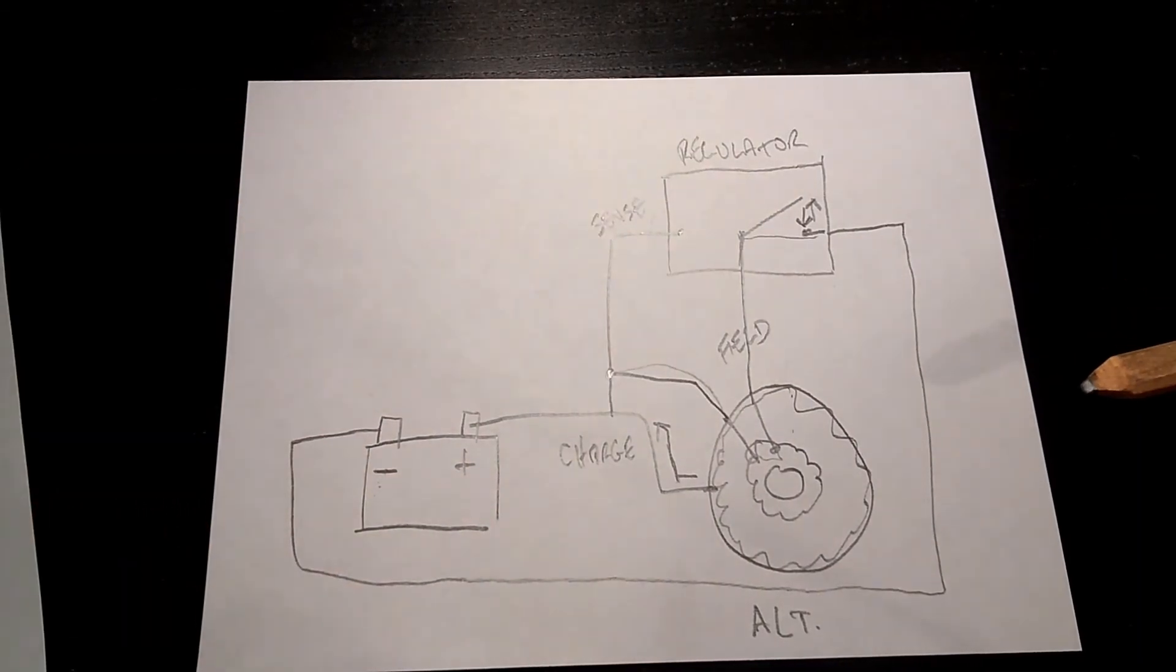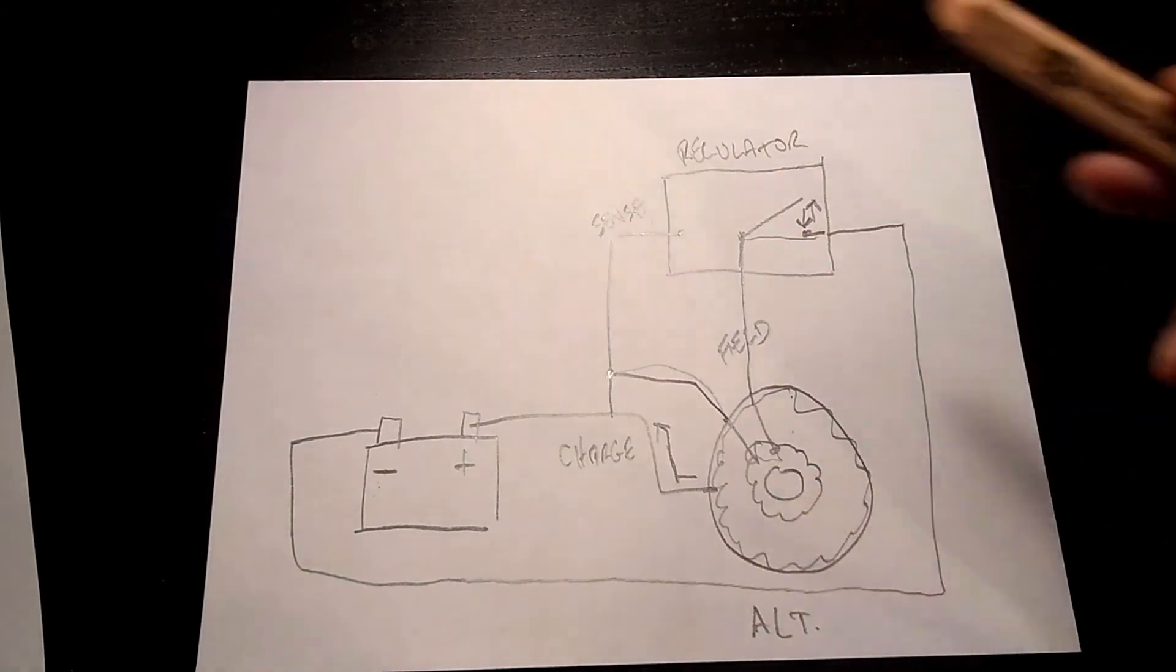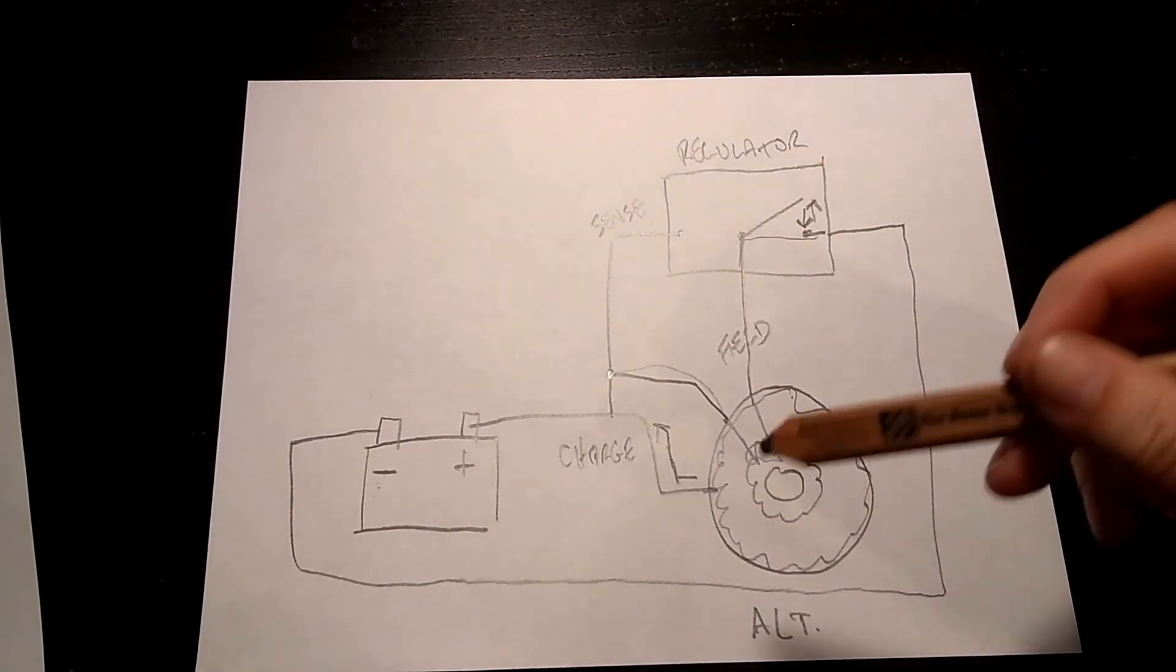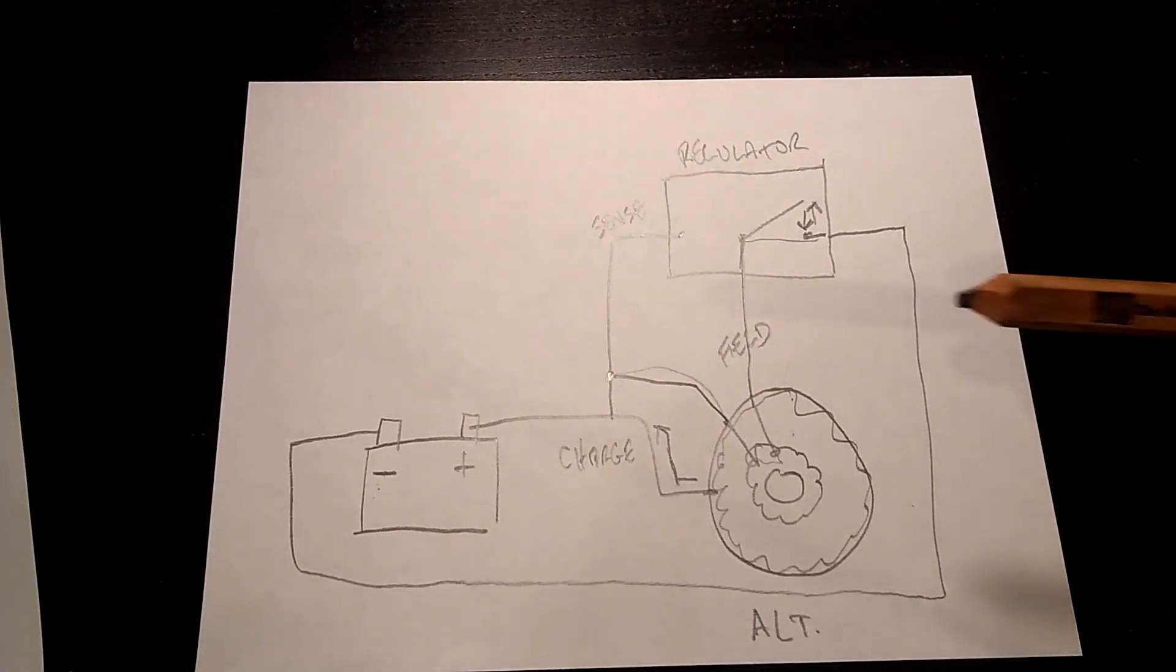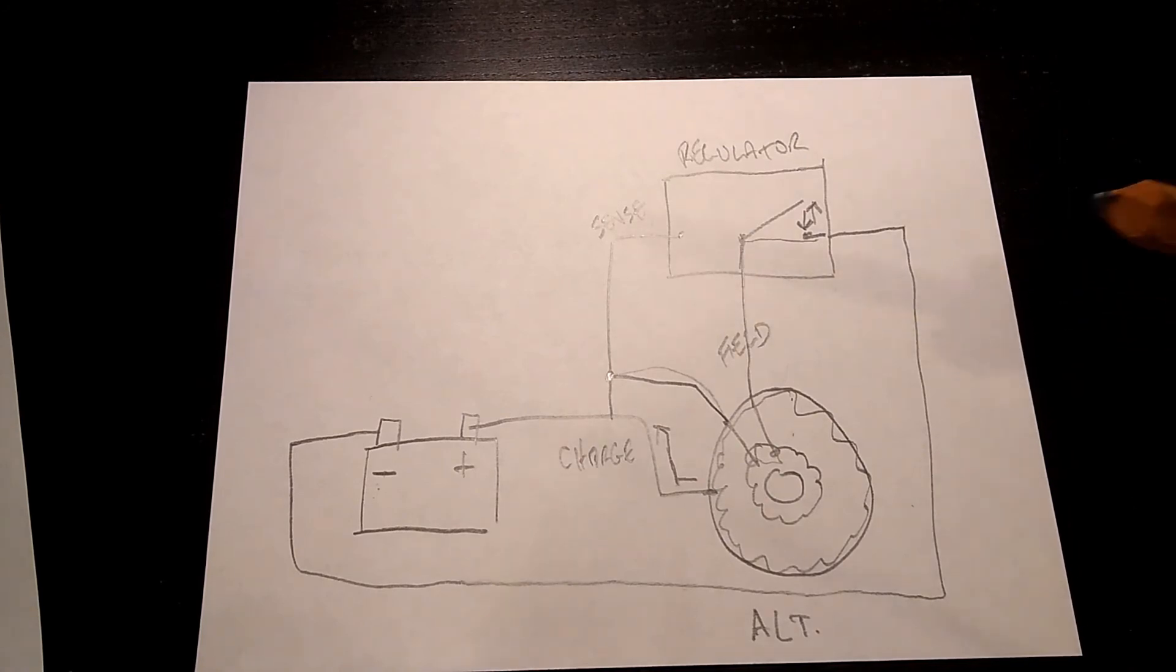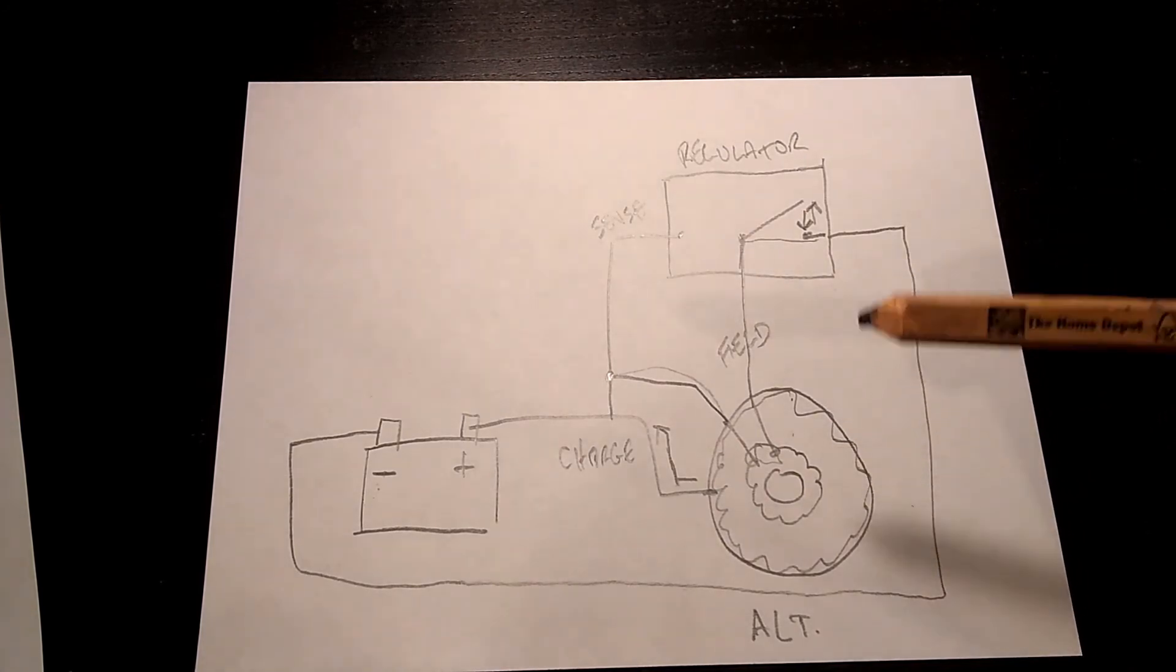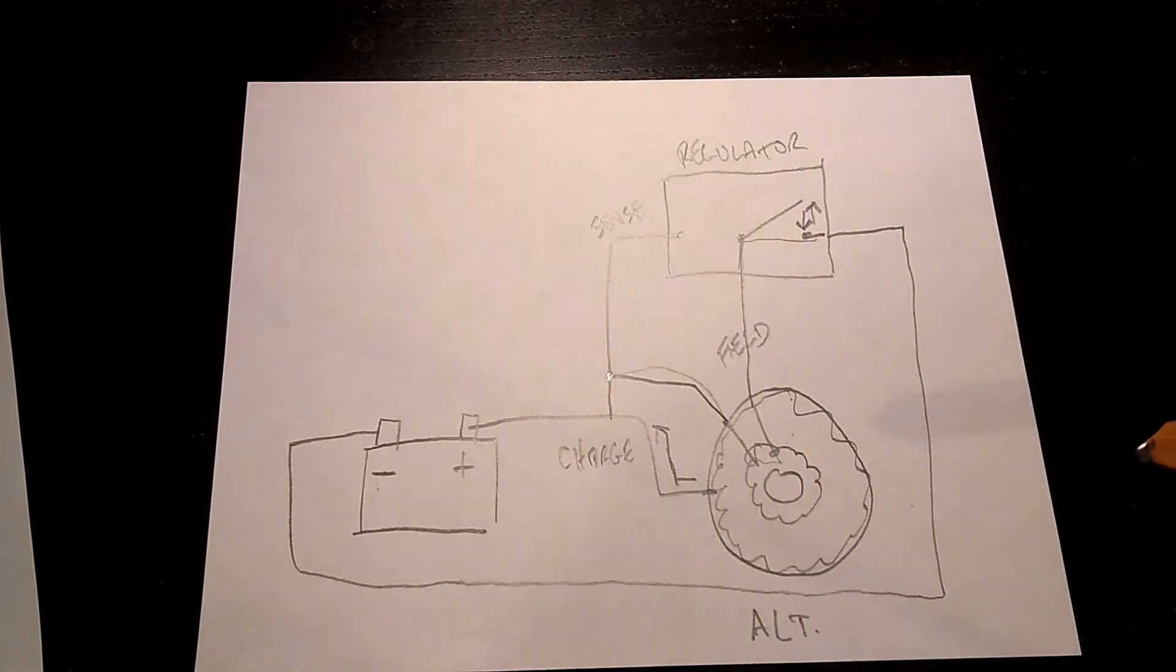They may look complex. They may be difficult because you've got a lot of wires, they're wrapped in loom, a lot of things like that. But that's all that's going on in any alternator and charging system on a vehicle. Now you know. Thanks for watchin'.